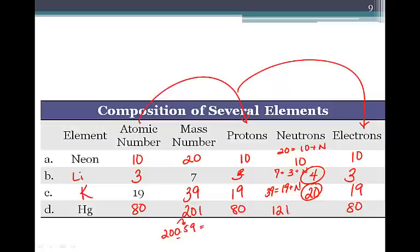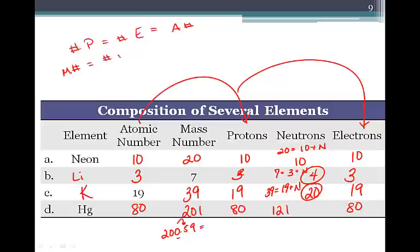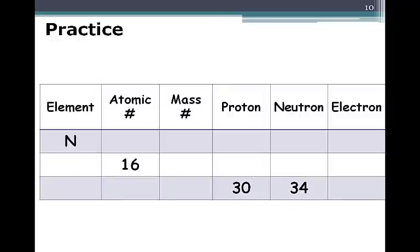So the number of protons, neutrons, and electrons aren't always the same. The number of protons will always equal the number of electrons, which equals the atomic number. The mass number equals the number of protons plus the number of neutrons. Pause the video lecture and practice here.